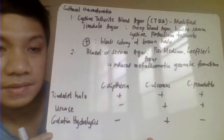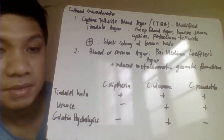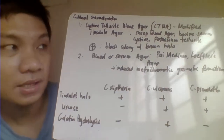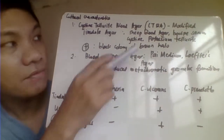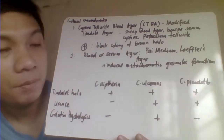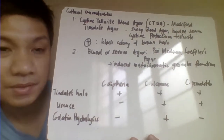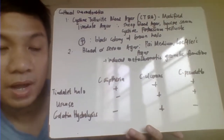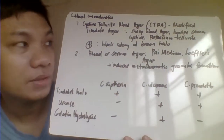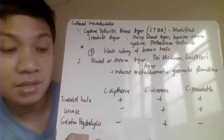For cultural characteristics, Corynebacterium grows on a selective culture medium called CTBA — cysteine tellurite blood agar — a modified Tinsdale agar containing sheep blood agar, bovine albumin/serum, cysteine, and potassium tellurite. The potassium tellurite is responsible for blackening of the colony. If the bacteria hydrolyze potassium tellurite, there is blackening of the colony — giving a black colony with a brown halo.